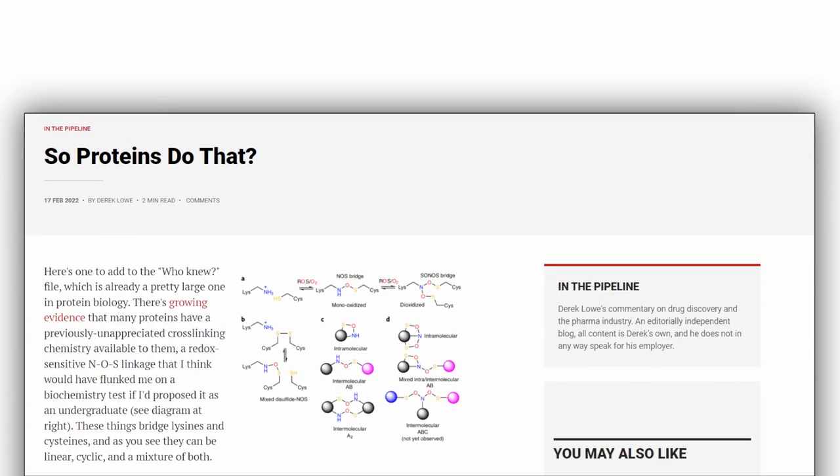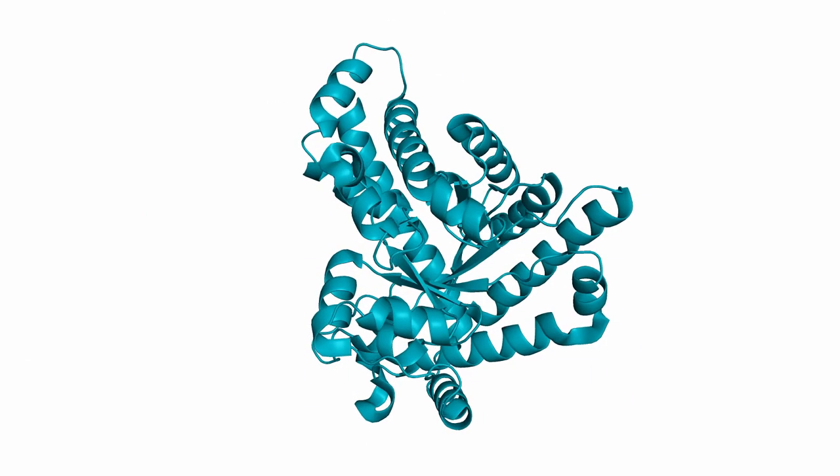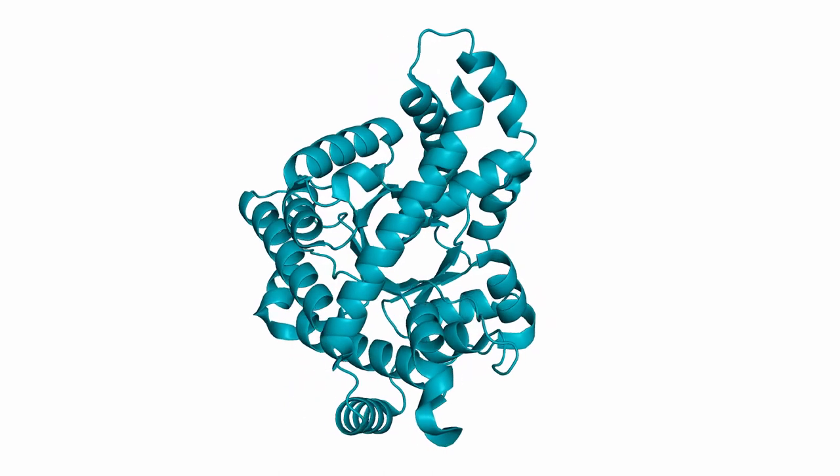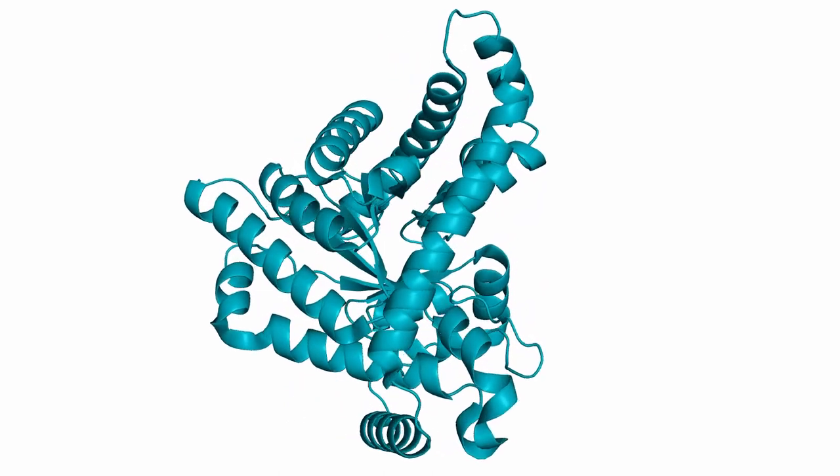A while ago I saw a post on Derek Lowe's blog In The Pipeline and was immediately hooked. Researchers found a so far unknown type of crosslinking in proteins, forming bonds between lysine and cysteine. Why is this so exciting? It's a pretty fundamental characteristic of proteins that has been overlooked for decades.